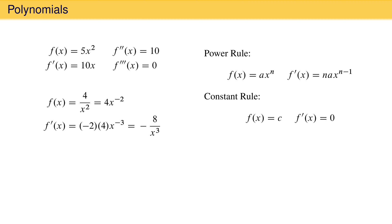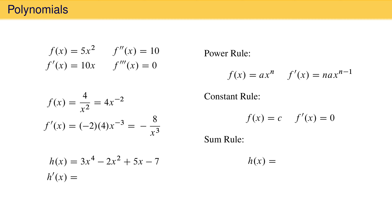This can be rewritten as minus 8 over x cubed. Now let's consider the function 3x to the fourth minus 2 times x squared plus 5x minus 7. To find the first derivative of this function, we use something called the sum rule. A function h of x that can be written as a sum of two other functions, such as f of x plus g of x, has a derivative that is the derivative of f of x plus the derivative of g of x. The sum rule tells us that the derivative of a sum is the sum of the derivative of each term evaluated individually.